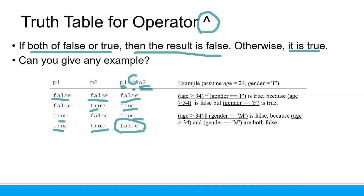Here is an example. Let's assume H is a variable with value 24, and gender equals 'F' for female. 'H > 34' is false because H is 24. 'Gender equals female' is true. Because one condition is true with OR, the result is true. Now: 'H > 34' is false AND 'gender equals M' is false — so the AND result is false.